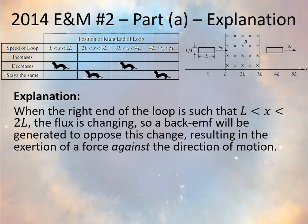That means the induced current is in the counterclockwise direction. You can use the right-hand rule to confirm: grabbing the bottom part of the loop with your thumb pointing right, your fingers curl out of the page — out of the page is exactly what you'd expect, confirming a counterclockwise current. Between 2L and 3L, nothing is changing. There is no change in magnetic flux, so there's no induced current and no change in speed.